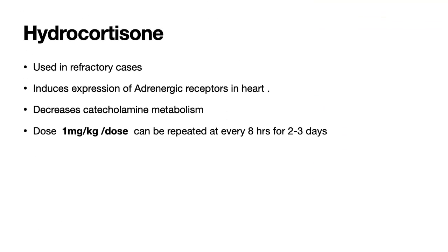Hydrocortisone, apart from its mineralocorticoid activity, helps in upregulating receptors that got down-regulated due to prolonged use of sympathomimetics. It also decreases catecholamine metabolism. The recommended dose of hydrocortisone is 1 mg per kg per dose every 8 hours for 2 to 3 days.